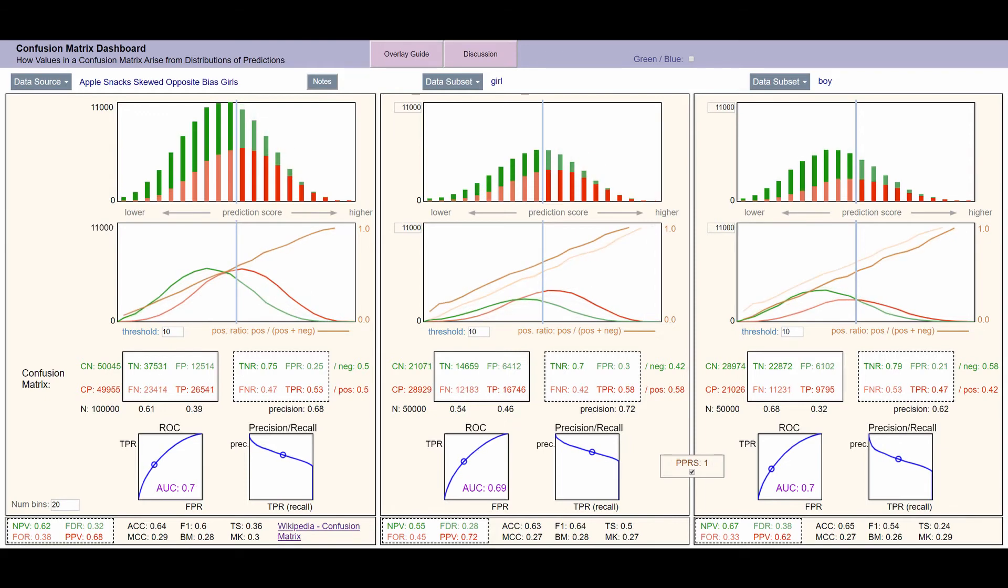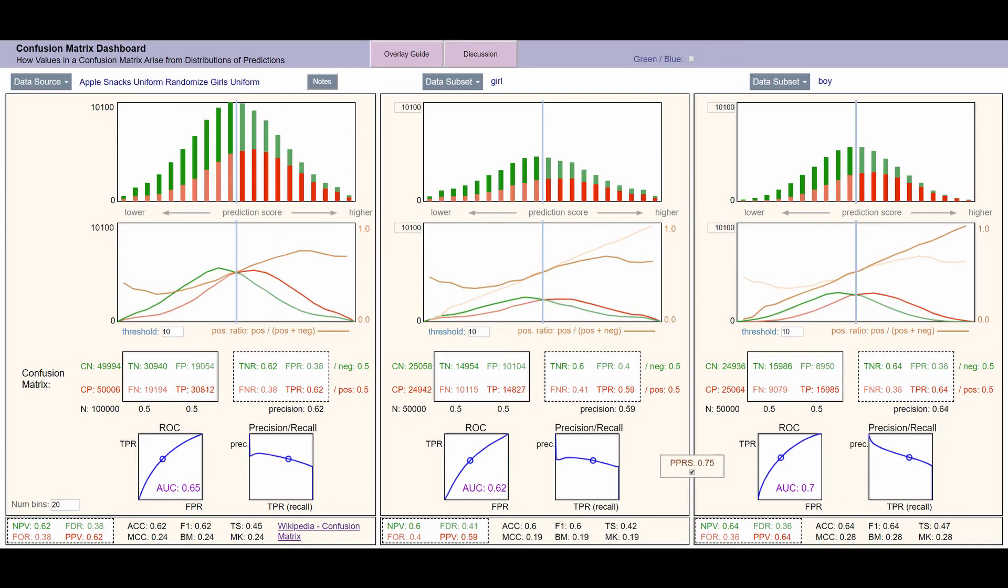I find that a PPRS less than about 0.2 indicates pretty good calibration accuracy, while a score above 0.7 indicates some significant bias.